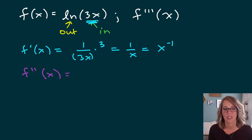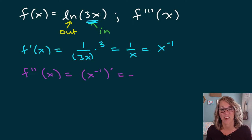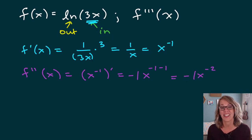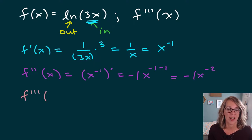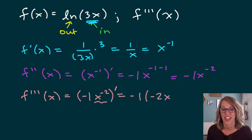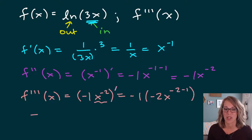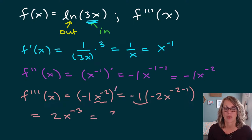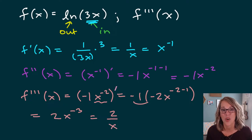The second derivative is going to be the derivative of x to the negative 1 prime — a nice power rule for this one. Negative 1 comes out in front, so negative 1 times x to the negative 1 minus 1, giving negative 1 x to the negative 2. For the third derivative, f triple prime of x, I take the derivative of my last answer. Again a nice power rule: negative 1 times negative 2 x to the negative 2 minus 1. Negative 1 times negative 2 is positive 2, giving x to the negative 3. Rewriting with no negative exponents, I get 2 over x cubed.